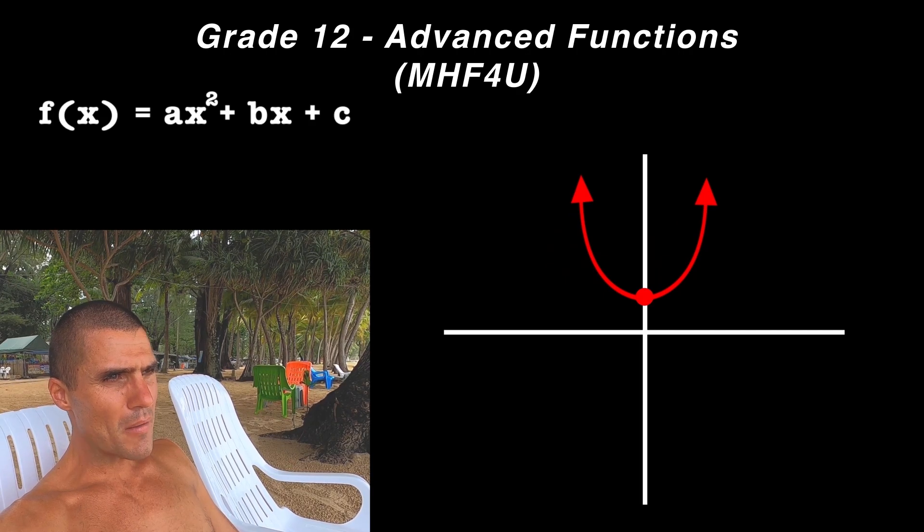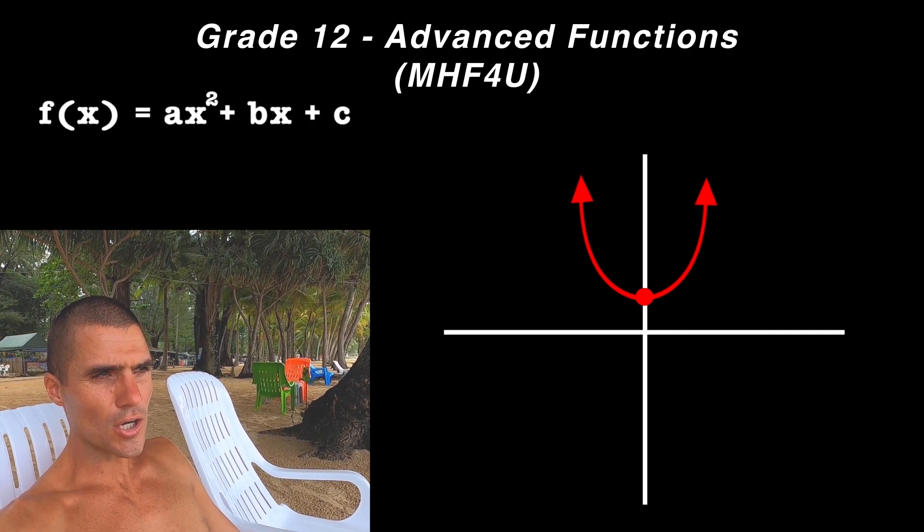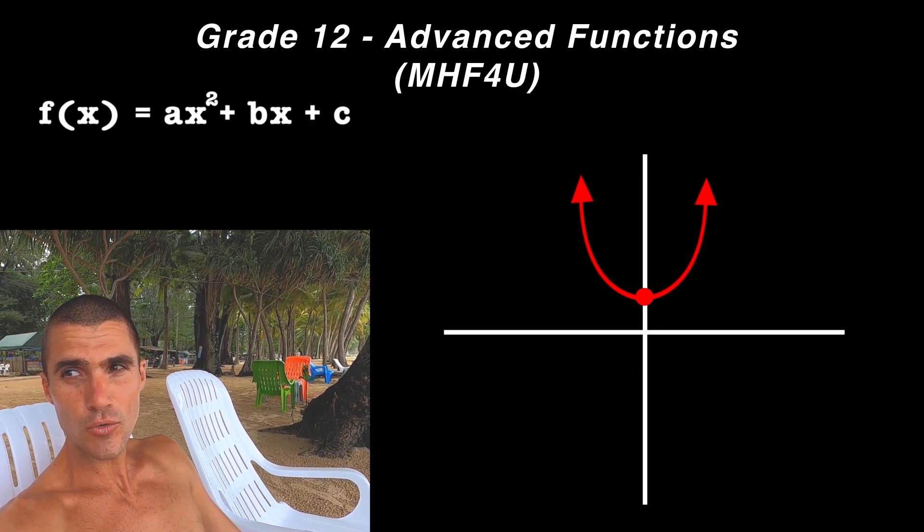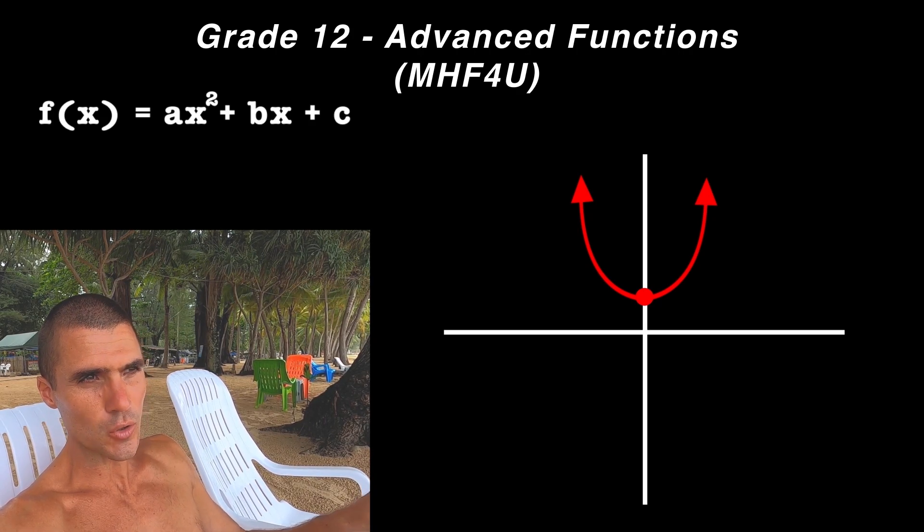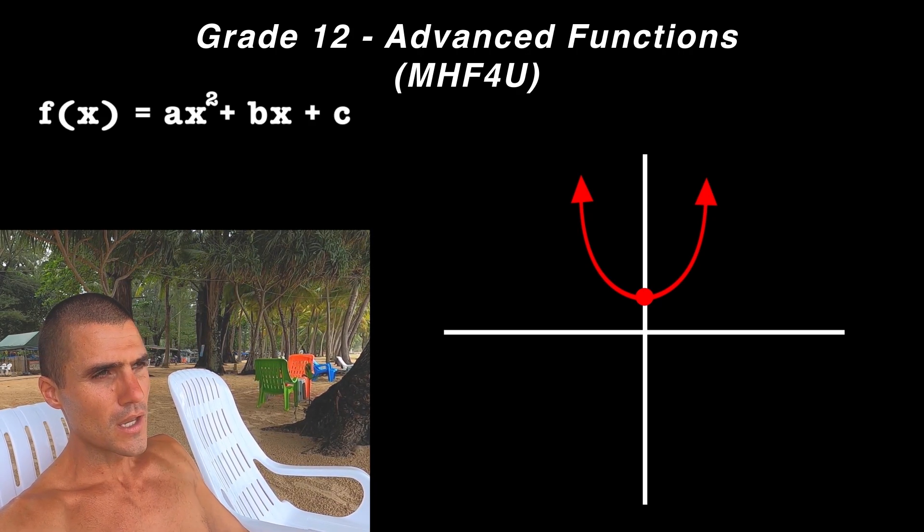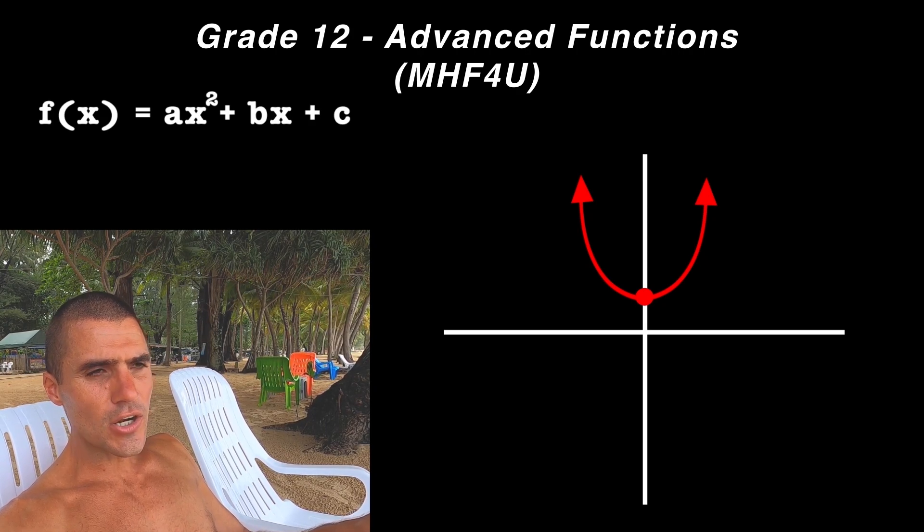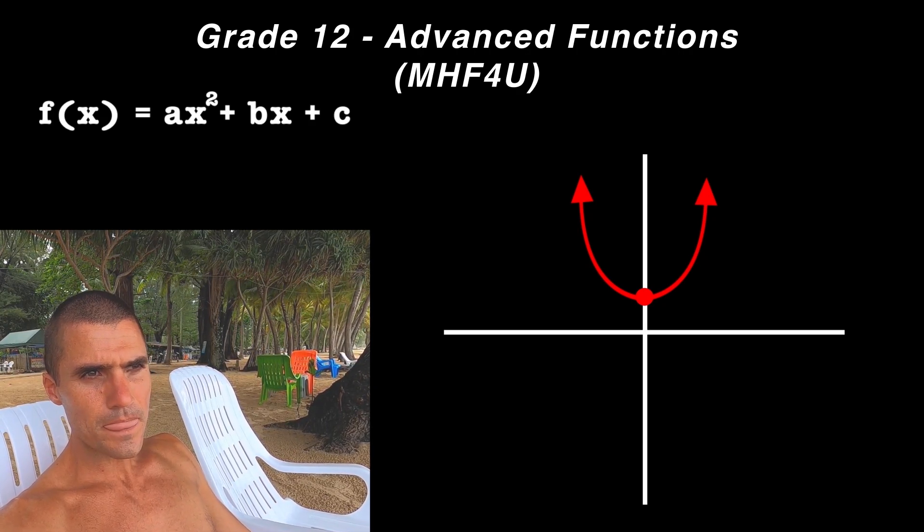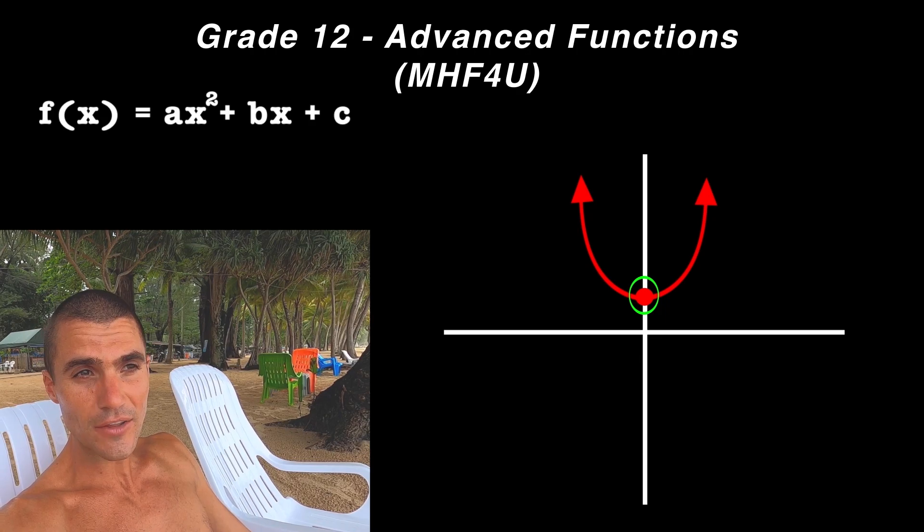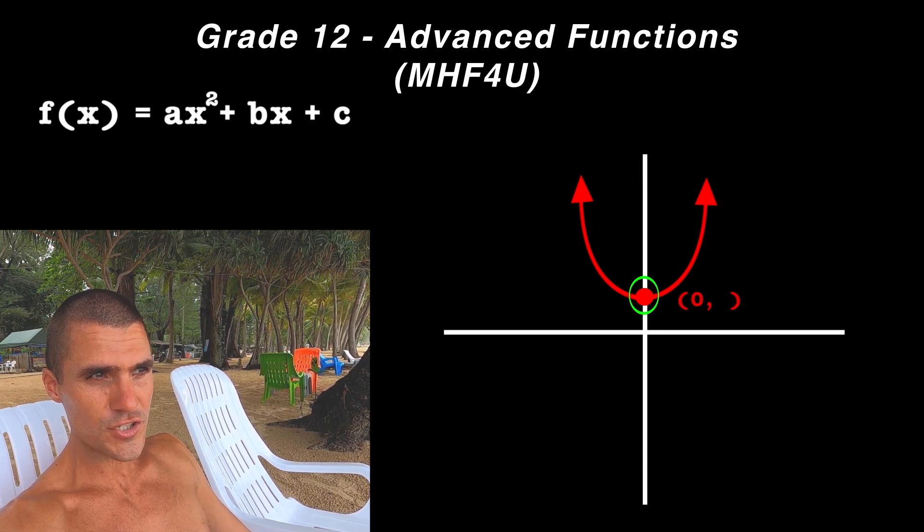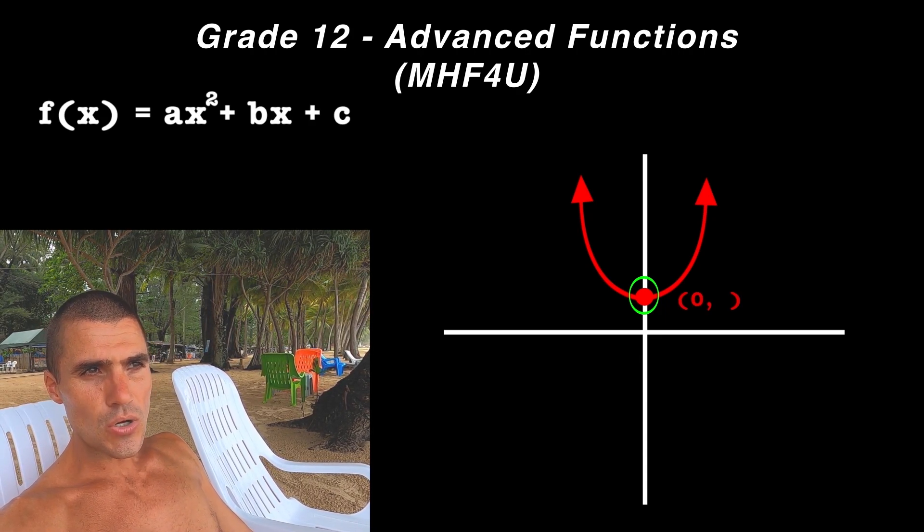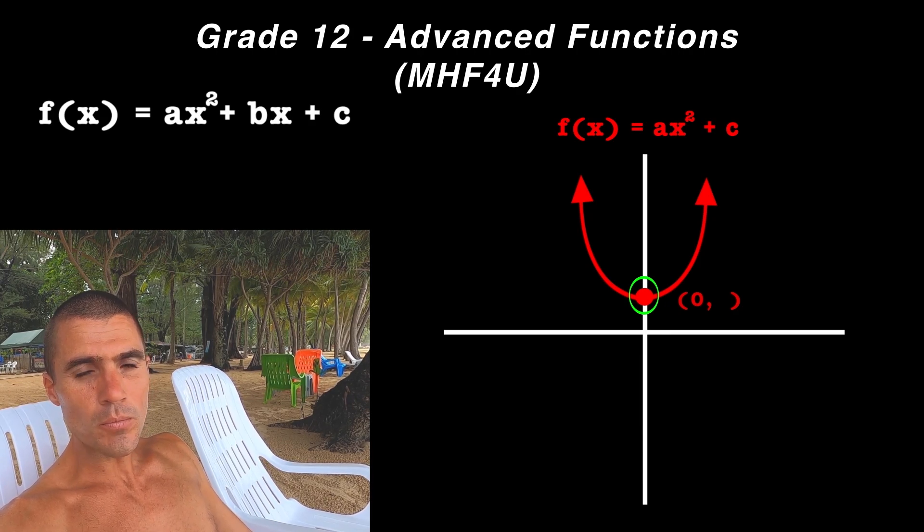It means that the vertex has to be on the y-axis. Now, if you remember when I first started talking about quadratics in the grade 10 videos, and more specifically quadratics in the standard form, we mentioned that if a quadratic is going to have a vertex on the y-axis, or if the x value is going to be zero of the vertex, the quadratic is always going to be in the format ax² + c.